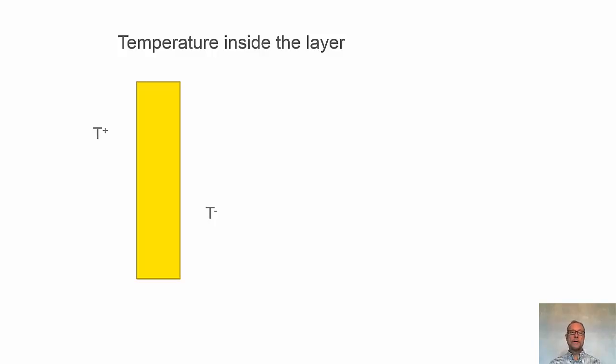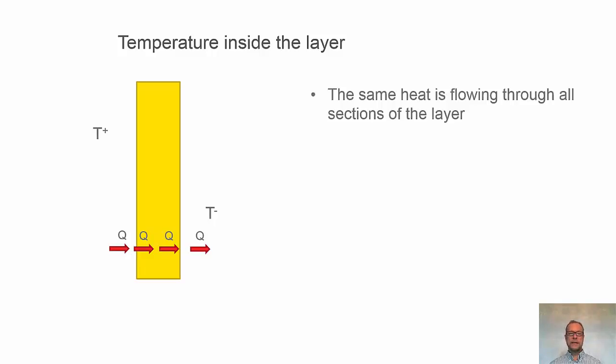It could be of interest to know how the temperature looks inside the layer. Here we have temperature T plus on the left-hand side and T minus on the right-hand side. When it's in steady state, when it has been stabilized, the temperature field, we have to have the same heat flow through the whole layer.